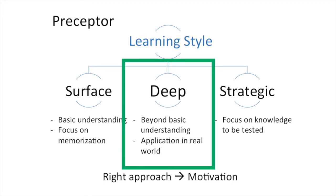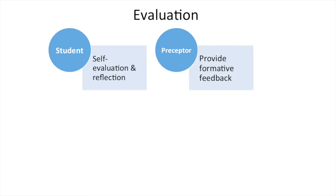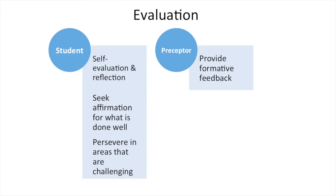Preceptors can facilitate a deep approach to learning through role modeling and coaching to discover answers to sticky practice situations. Using a strengths approach and finding what a student does that is right helps to inspire the student. Patience and tolerance are valuable to students who are anxious to get things right. Keep the focus on the client. Finally, it is critical to evaluate learning. This requires self-evaluation and reflection on the part of the student, as well as regular formative feedback from the preceptor. This is where the strongest link to motivation is evident in the learning process, as students need affirmation for their achievements and a sense of how to continue to learn in areas that are more challenging.